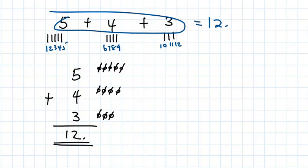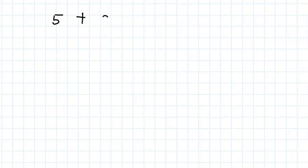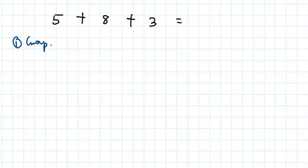Now let's try to solve five plus eight plus three. Remember, you have various options. The first one is to group the first two numbers: five plus eight gives 13, and 13 plus three gives 16.